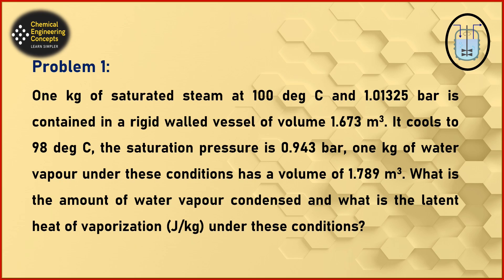The problem says that we have one kilogram of saturated steam present at 100 degrees centigrade and 1.01325 bar pressure, contained in a rigid-walled vessel of volume 1.673 cubic meters. It cools to 98 degrees centigrade. The saturation pressure is now 0.943 bar. We have 1 kilogram of water vapor under these conditions, which has a volume of 1.783 cubic meters.